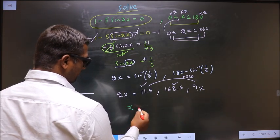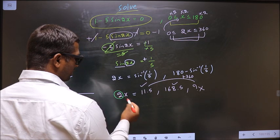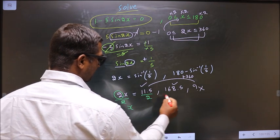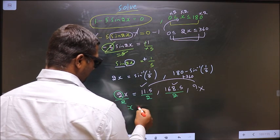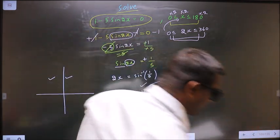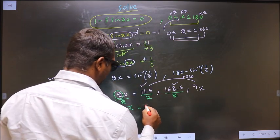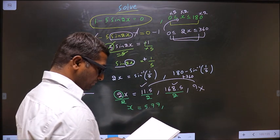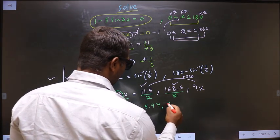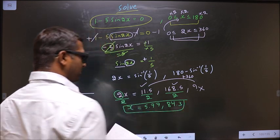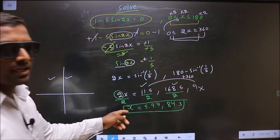Now to get the values for x, you should remove this 2. For that, you divide by 2. So we get x equal to this by 2, which is nothing but 5.75. This by 2 is nothing but 84.25. This is our answer.